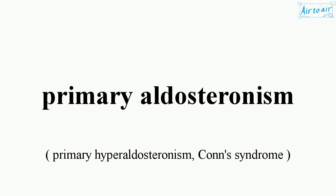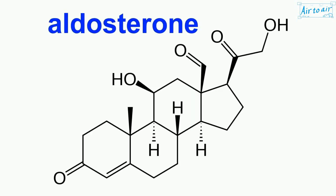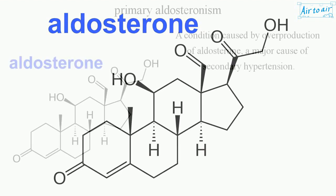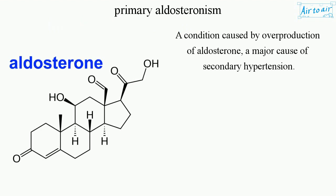Primary aldosteronism is a condition caused by overproduction of aldosterone and is a major cause of secondary hypertension.